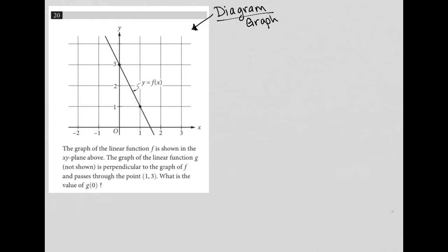So the question says, the graph of the linear function f. Alright, so that's a hint. Anytime I see that wording in a question, linear function, I'm immediately thinking I'm going to probably need to use y equals mx plus b. It's just a force of habit at this point for me.